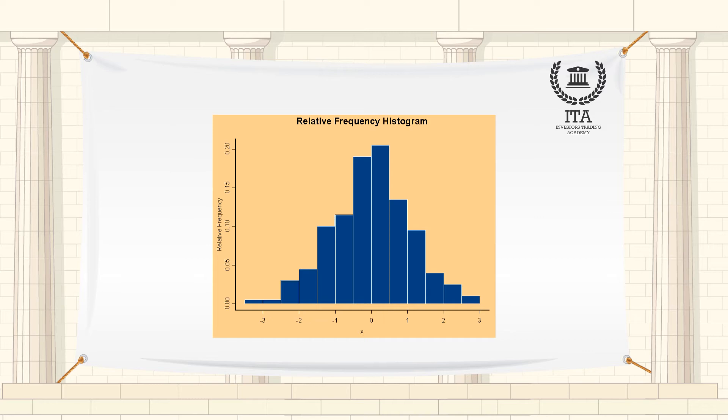The rectangles of a histogram are drawn so that they touch each other to indicate that the original variable is continuous.